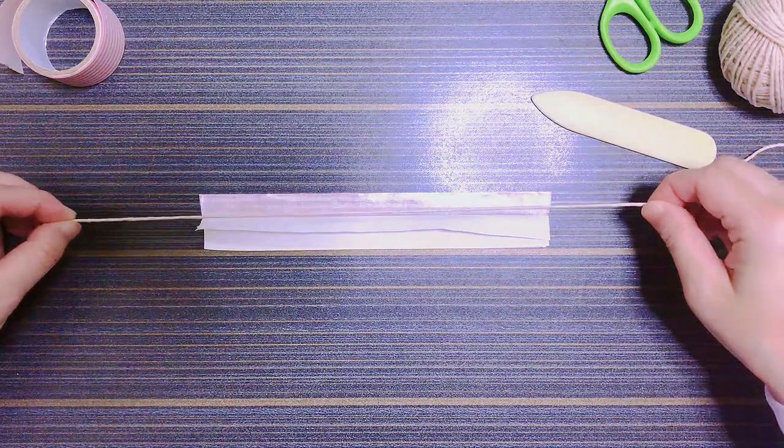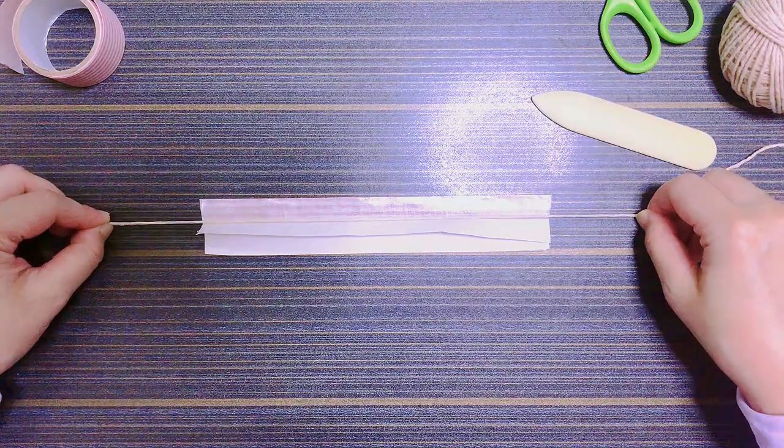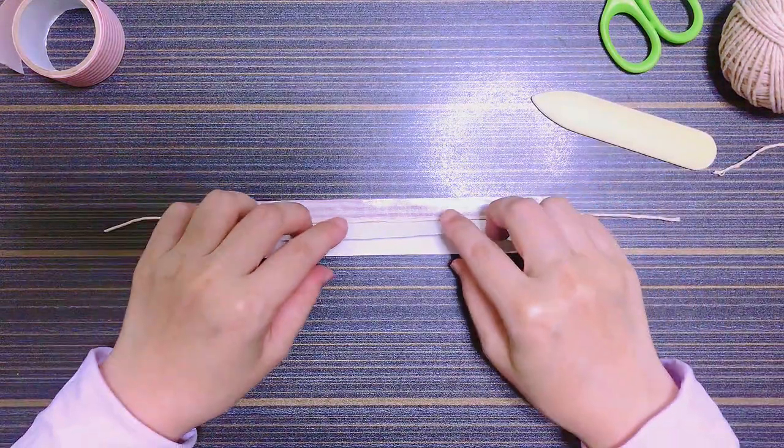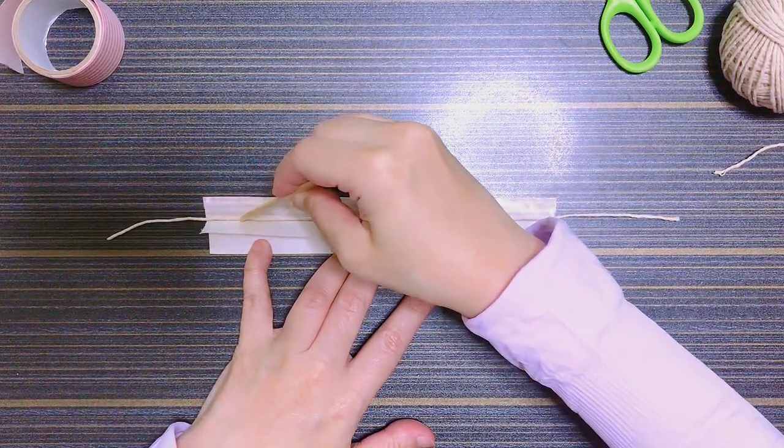So now I'm lining my twine exactly on the folded line of the release paper, acting as the guideline. Then I'll use the bone folder to tap it down to stick it properly.